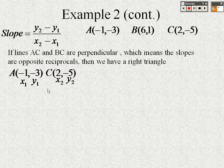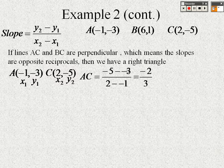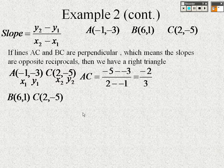Using the slope formula for line AC, with A = (−1, −3) as (x₁, y₁) and C = (2, −5) as (x₂, y₂): slope = (−5 − (−3)) / (2 − (−1)) = −2/3. So the slope of AC is −2/3.